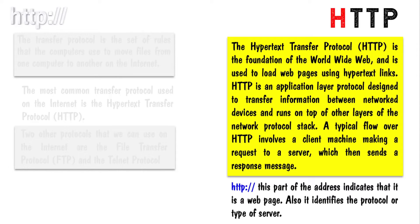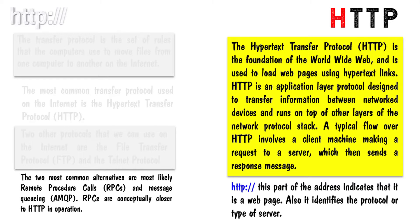HTTP, this part of the address, indicates that it is a web page and also indicates the protocol or type of server. The two most common alternatives are most likely remote procedure calls and message queuing. RPCs are conceptually closer to HTTP in operation.